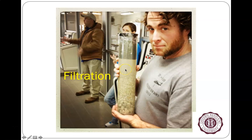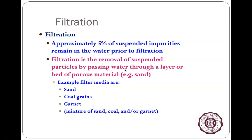This style is very common at a conventional water plant. Filtration removes approximately five percent of remaining suspended particles, and often it involves moving the particles by putting them through some sort of porous material. Sometimes it's manufactured filters, but in many cases it's traditional bank filtration — passing the water through a layer of porous material such as sand, coal grains, or garnet.